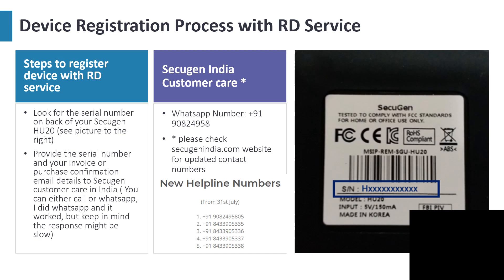This is the process for registering the device with RD service. Since this device is purchased in the US, the serial number on the device cannot be used directly to register with RD service. What you have to do is take a copy of the invoice and a photo of the serial number and send it to the SecuGen vendor. You can provide your invoice copy or email confirmation with the order number, and either email it to them at SecuGenIndia.com or WhatsApp them. I have posted the WhatsApp number and helpline numbers here, but please check their website for updated numbers.